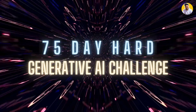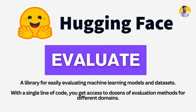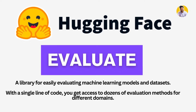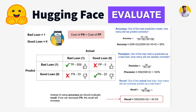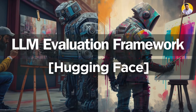Hello guys, welcome to Free Birds. In this video, I will tell you how you can build your own large language model evaluation framework with the help of the Hugging Face Evaluate library. This library is a one-stop solution to build your own evaluation framework because it can do any kind of evaluation with multiple metrics on different problem statements — from text classification, question answering, chatbot evaluations, and more.